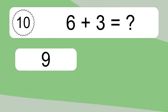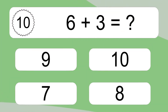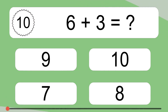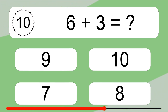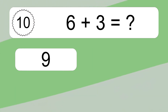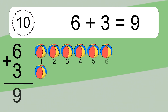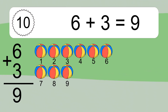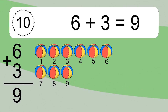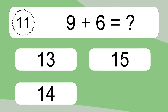6 plus 3 equals what? 6 plus 3 equals 9. Let's count it. 1, 2, 3, 4, 5, 6, 7, 8, 9.